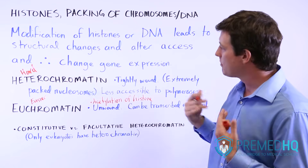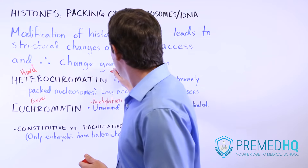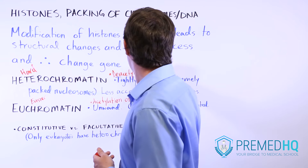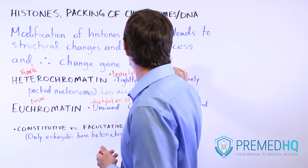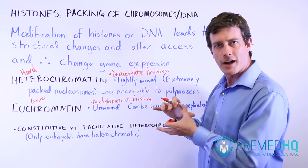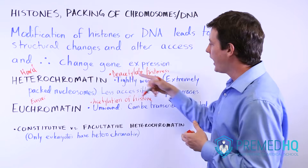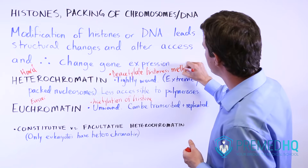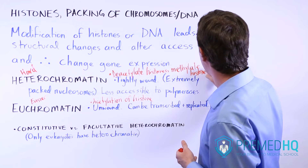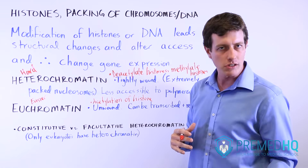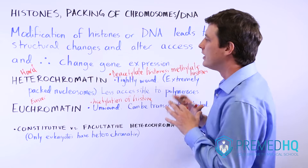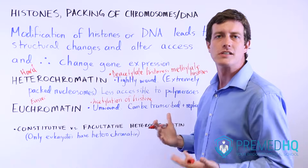Heterochromatin has the opposite regulators. If you deacetylate the histones, that favors heterochromatin and reduces the expression of those areas of DNA, which are now packed much more tightly. Another factor is methylation of those histones, which also gives you control over the expression of genes and thus the expression of proteins, influencing the way that the genetic code is expressed physiologically.